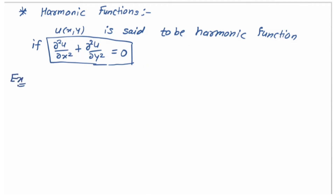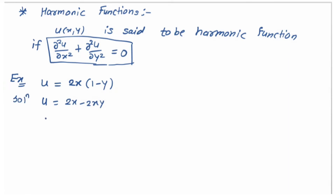For example, suppose we have a function given — u is just a notation — suppose the function given is u = 2x(1 - y). We need to check whether it is harmonic or not. Expanding: u = 2x - 2xy. Now take its derivative with respect to x, so u_x = 2(1 - y).